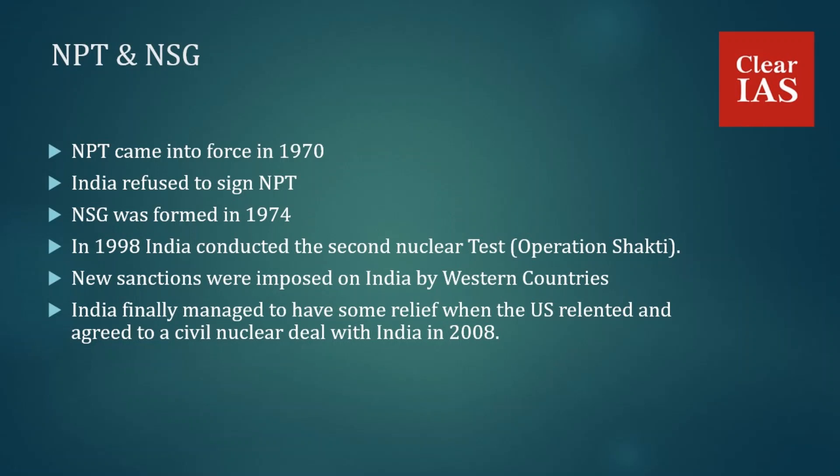The 2008 civil nuclear deal is also known as the '123 Agreement.' Under this agreement, India signed a civil-military separation plan and a safeguard agreement with the International Atomic Energy Agency. In return, US diplomacy helped India secure an NSG waiver.